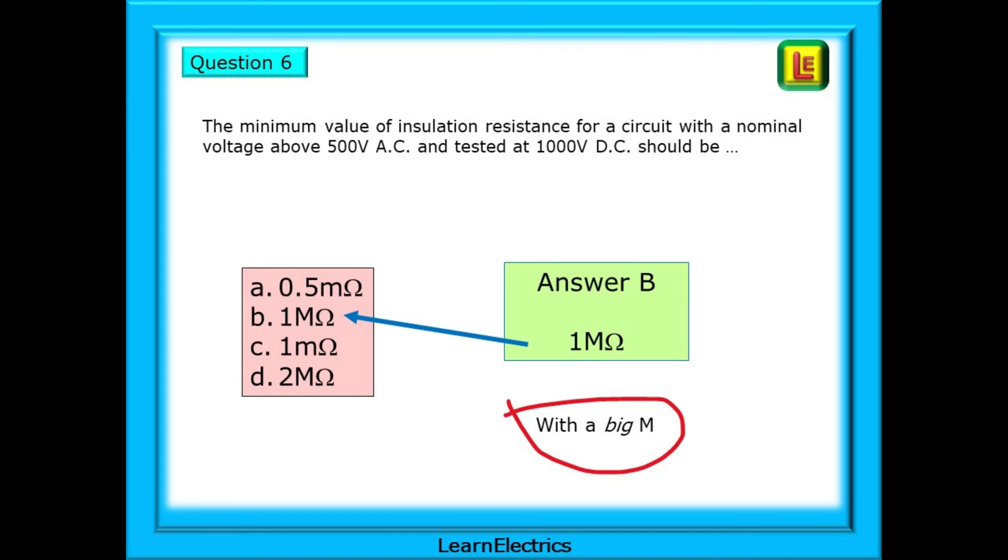Be careful when choosing. Some questions on this will give you one with a big M, and one with a small M. The answer must be with a big M, 1 million ohms of resistance. Had you chosen the little M, this would be 1 milliohm, 1 thousandth of an ohm, and you would have been wrong.